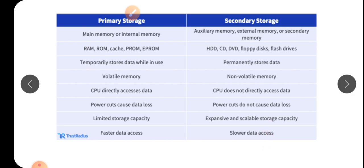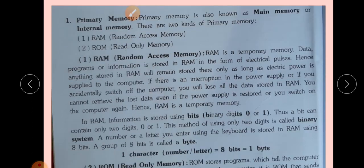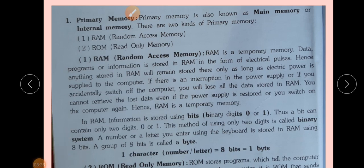So the concept of primary and secondary memory storage is clear. Primary memory is also known as main memory or internal memory. There are two kinds of primary memory: one is RAM — Random Access Memory — and two is ROM — Read Only Memory. Let's see about Random Access Memory and Read Only Memory.